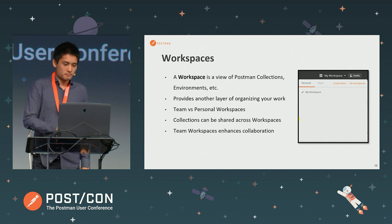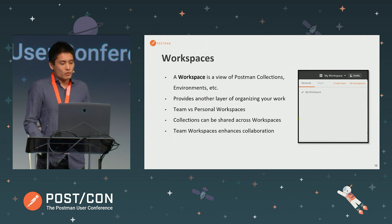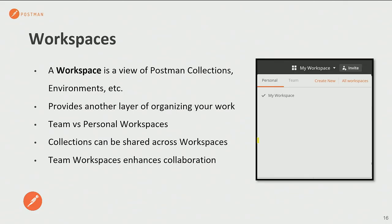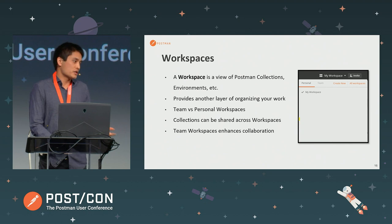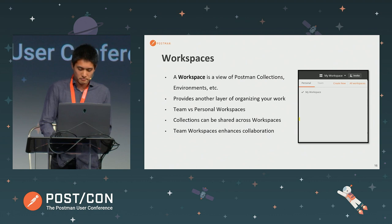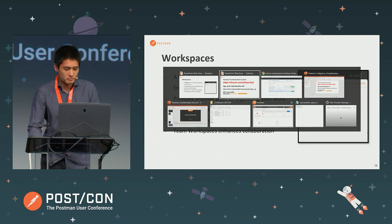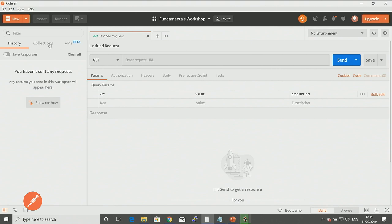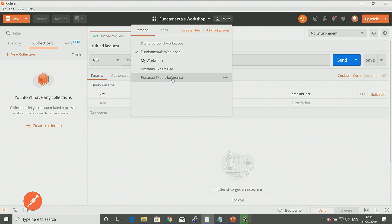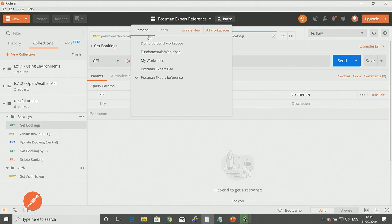All of these things work together in a real-time collaborative environment that we call workspaces. A workspace is a view of our collections, environments, etc. — they give us another layer for organizing our work. We have two different types: team and personal workspaces. As a quick example, I have a workspace specifically for this session called the Fundamentals Workshop — you can see it's currently empty, no collections. If I switch to the Postman Expert reference workspace, I have a number of collections set up — this is how we organize different sets of work.